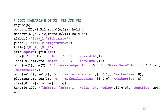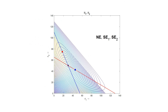Lastly, this is the code for Figure 6, and this is what Figure 6 looks like. Here we have juxtaposed the Nash equilibrium point with the two Stackelberg equilibrium points — with Agent 1 and Agent 2 as leader.